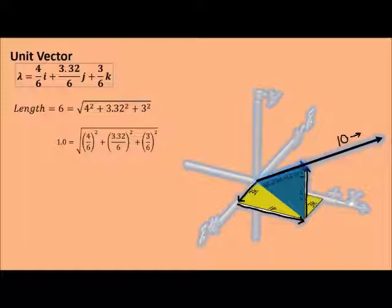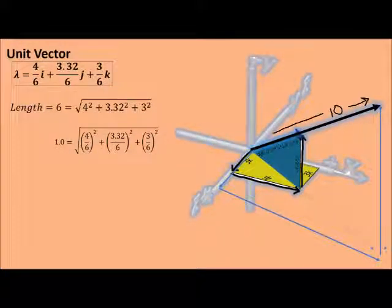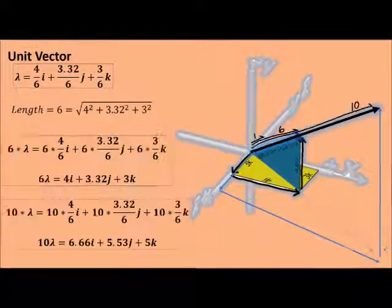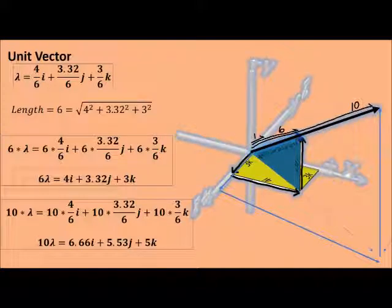Now the really useful thing we can do here is any vector of any length, if it's just pointing in the same direction, we can multiply it by that same unit vector and break it into its i, j, k components. So whether we have something that's 10 long or 6 long, if they're in the same direction, you can use the same unit vector and get your i, j, k components.